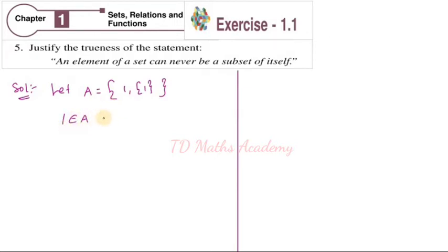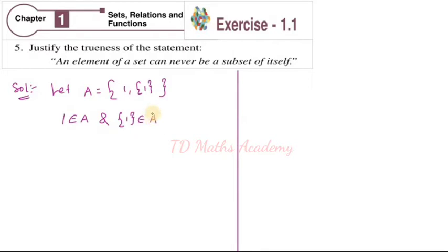1 is an element of A, and the set {1} is also an element of A. If I say element, this is element — the set bracket is element. So set {1} is an element of A. Understand: 1 is an element of A and set {1} is also an element of A. So this is the first concept — I am taking two elements in set A.